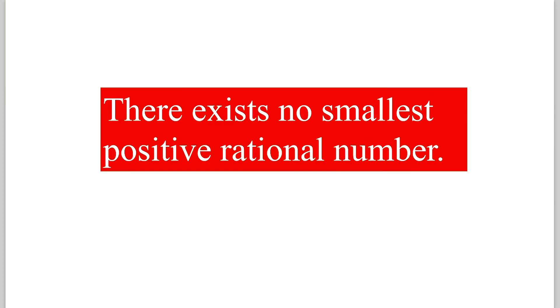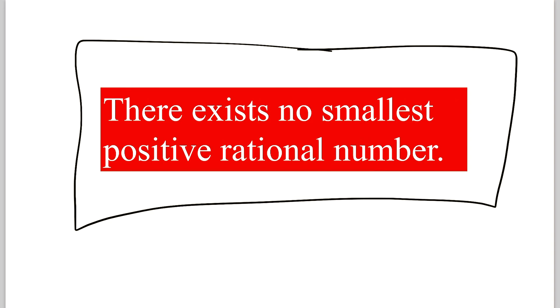Try proving this proposition by contradiction. There exists no smallest positive rational number. And remember that a rational number is a number that can be written in this form, A over B, where A and B are integers, and B is not equal to 0. So give it a shot and try to prove this proposition by contradiction.